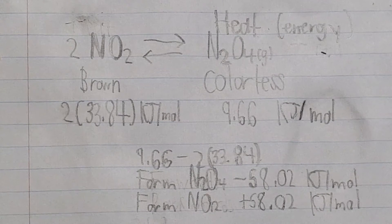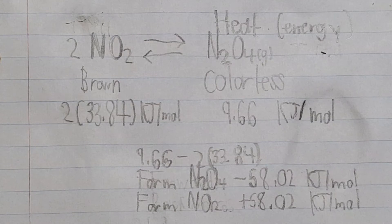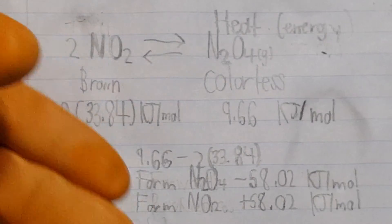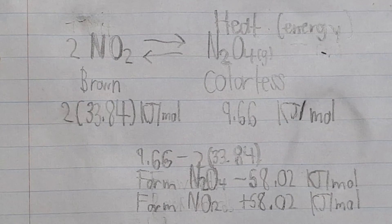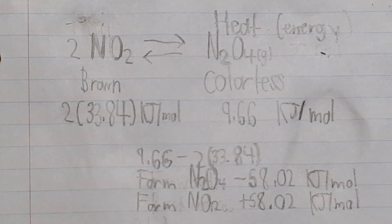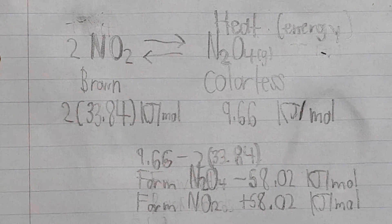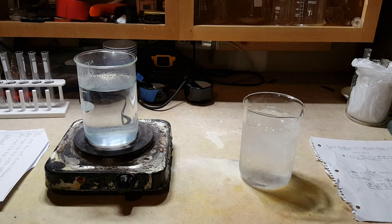So to form dinitrogen tetraoxide, you have to take energy away from the system so that dinitrogen tetraoxide cannot break apart once it's formed to just form nitrogen dioxide again. And to form nitrogen dioxide, you've got to add energy so that you can break apart most of the dinitrogen tetraoxide to form more nitrogen dioxide. So let me adjust my camera position so you can see my method of changing the equilibrium.